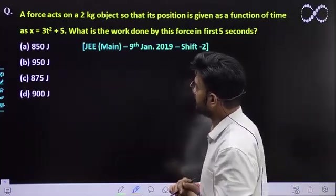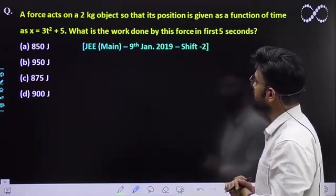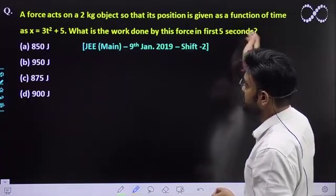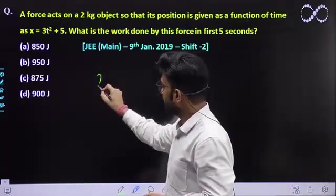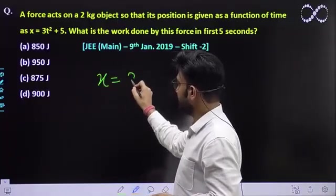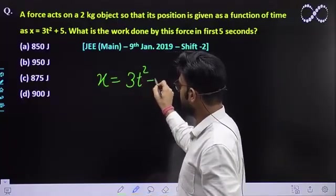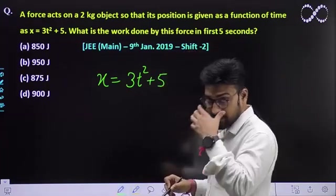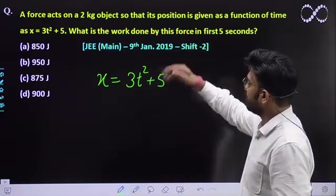The question says: a force acts on a 2 kg object so that its position is given as a function of time. Okay, displacement-time relation is already given to you of an object.